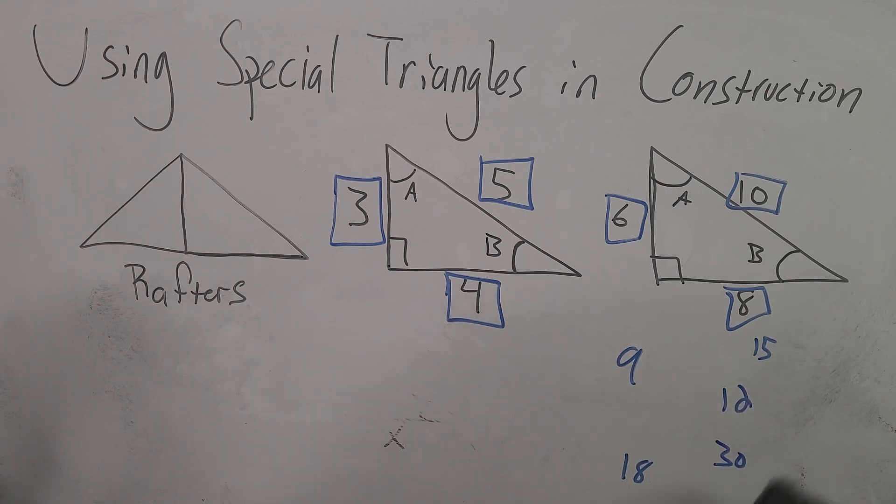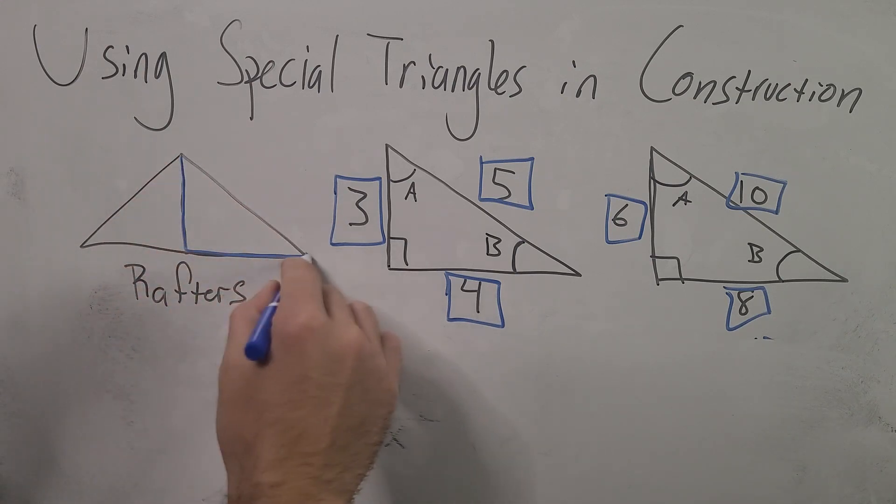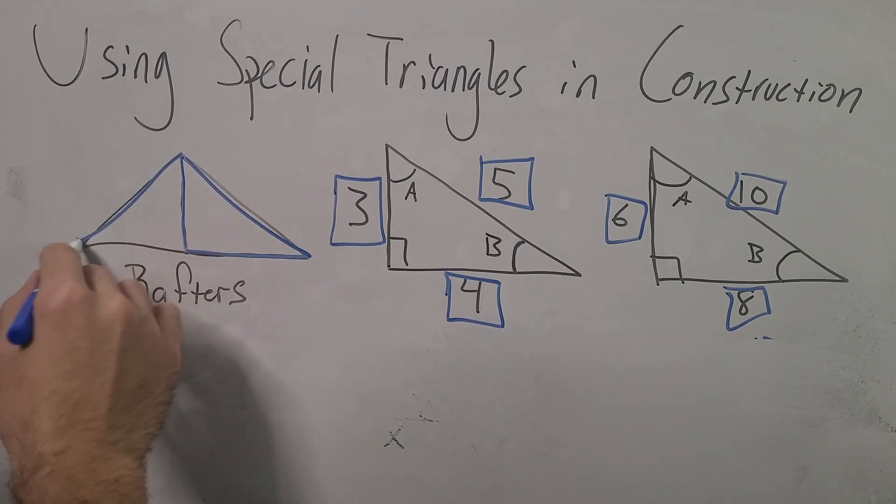We could use these measurements for any right triangle. And like I said we want this roof to be symmetrical so all we have to do is the math one time and then we just have to duplicate it twice so that we could get one half of the roof and then we could get the other half of the roof.